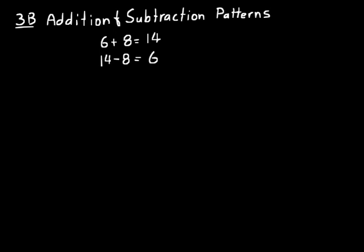So if we had a problem like n minus 8 equals 6 and wanted to know the missing number, we could think: addition undoes subtraction. So n equals 8 plus 6, which is 14. And indeed, 14 minus 8 equals 6, so n equals 14.